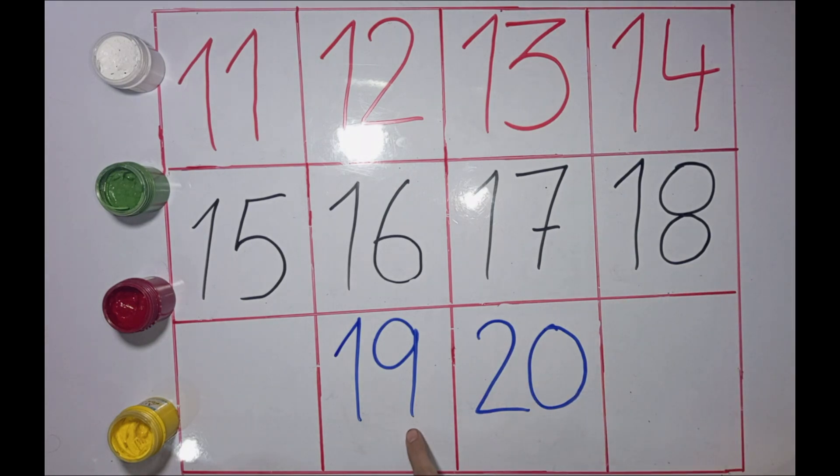1, 9, 19. 19 football. 2, 0, 20. 20 babies. Yay!